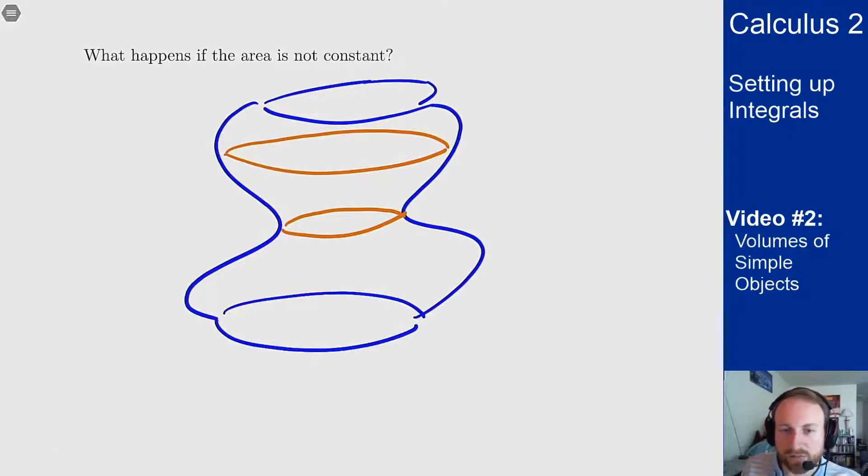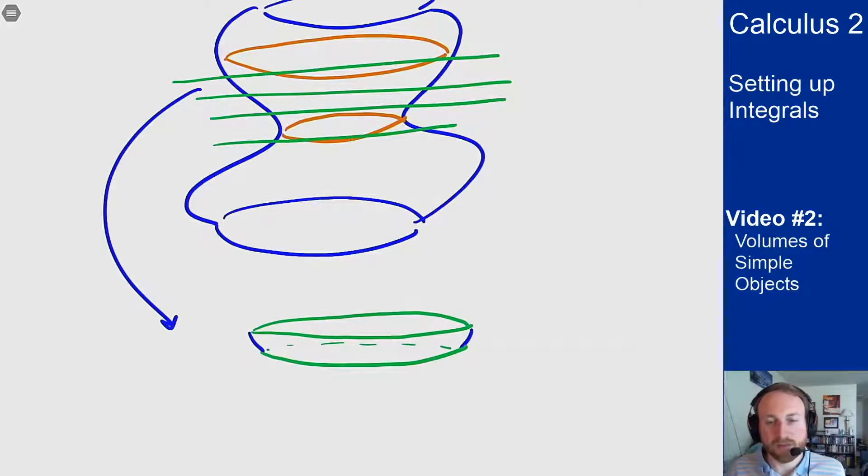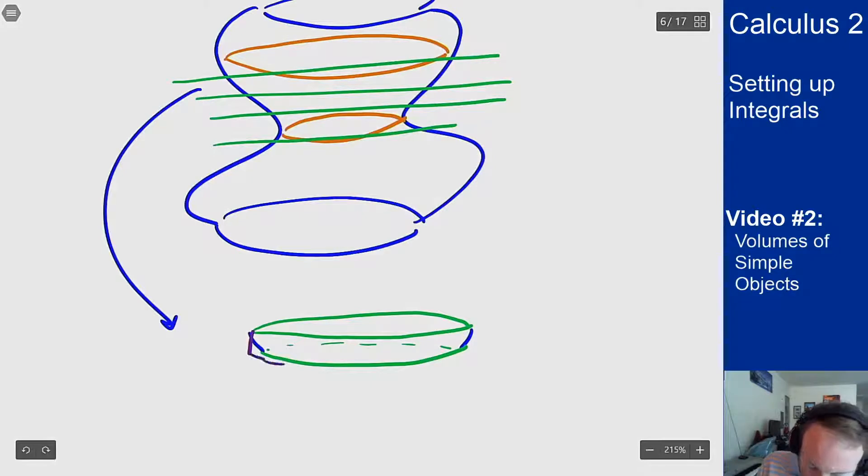Well the idea goes back to our idea of how we found areas under curves for integrals. Let's chop this into little pieces in the vertical direction. And you keep doing this. If I look at any one of those little slices, I get what's almost a tiny cylinder.